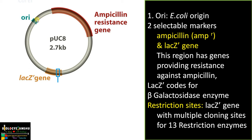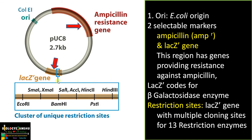Looking at the features of the vector, it has an E. coli origin of replication (ORI), just like PBR 322, but here there is a mutation that results in a high copy number. It has two selectable markers: the first is the ampicillin resistance gene, and the second is the lacZ gene. The ampicillin resistance gene provides resistance against ampicillin, while the lacZ gene encodes the enzyme beta-galactosidase. There are 13 restriction sites within this lacZ gene.